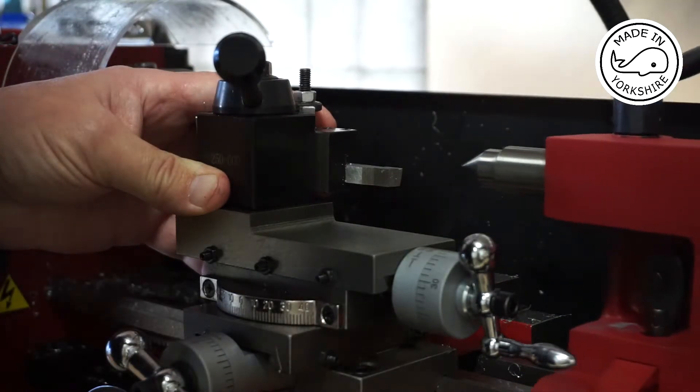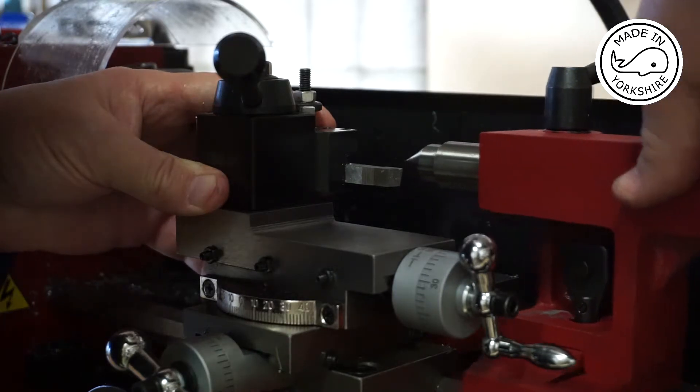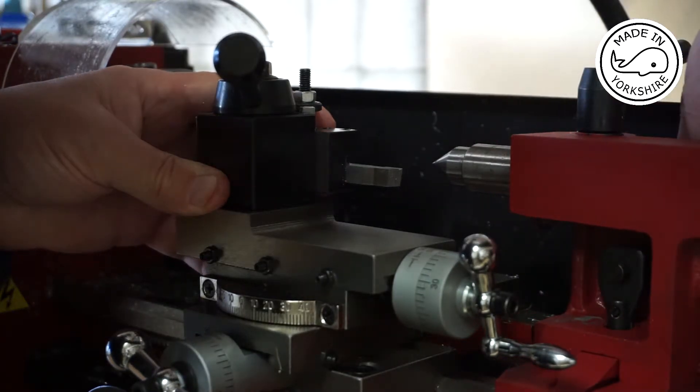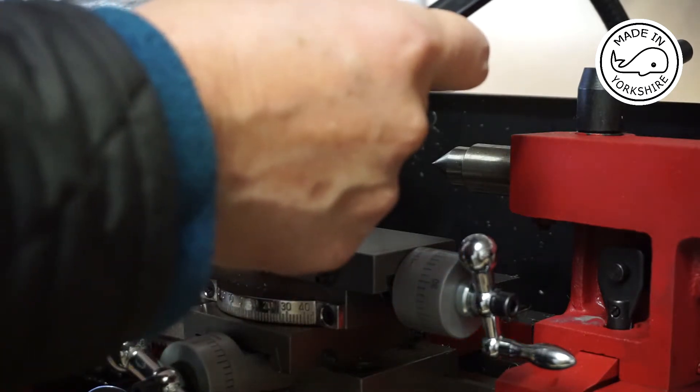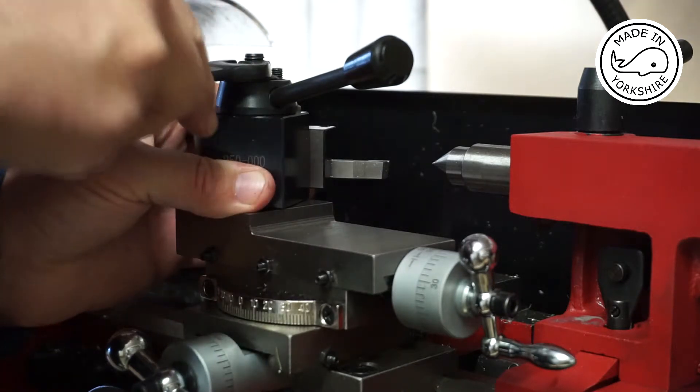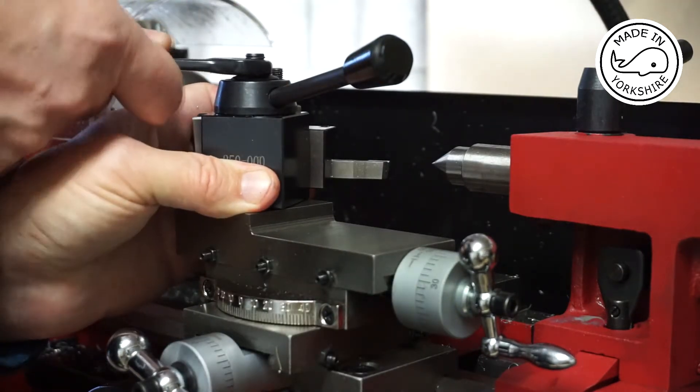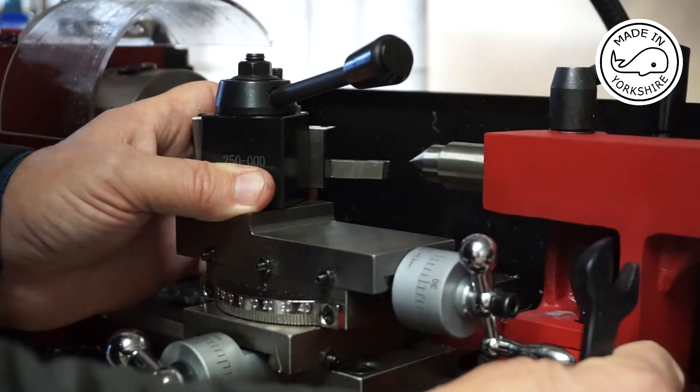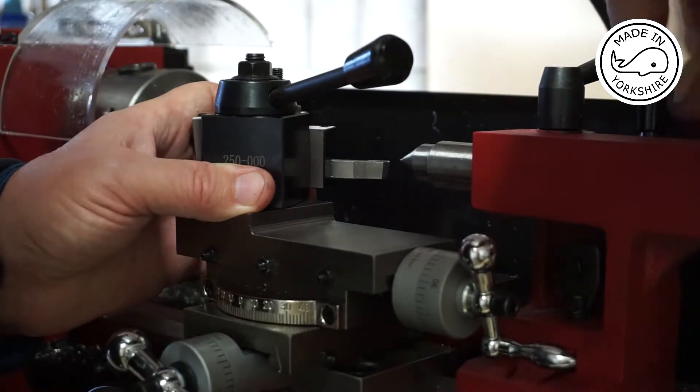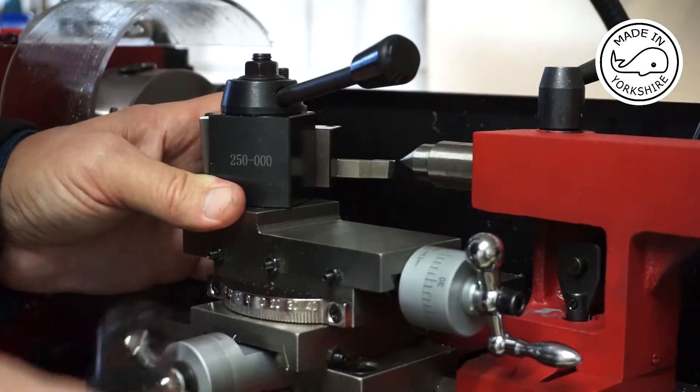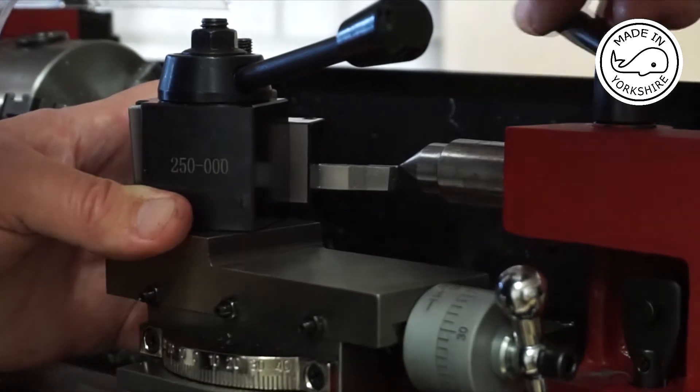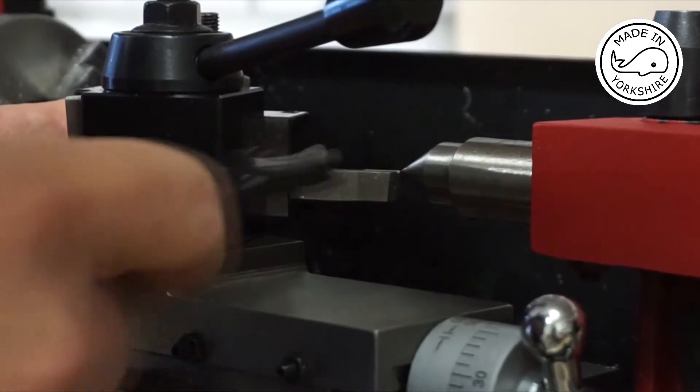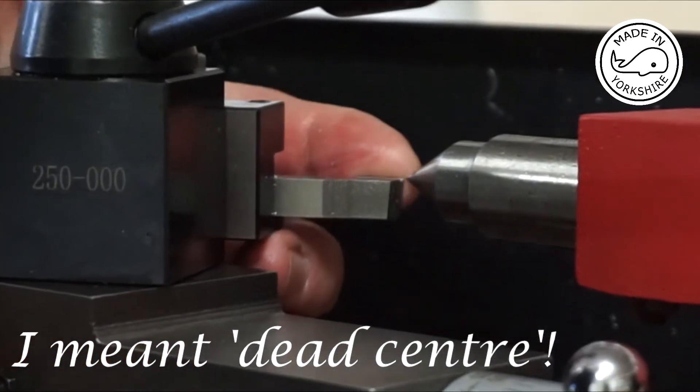Brought up the tail stock. Locked the tail stock. Loosen the tool holder off a little bit and twist it round. Tighten it down. Bring the tail stock in.